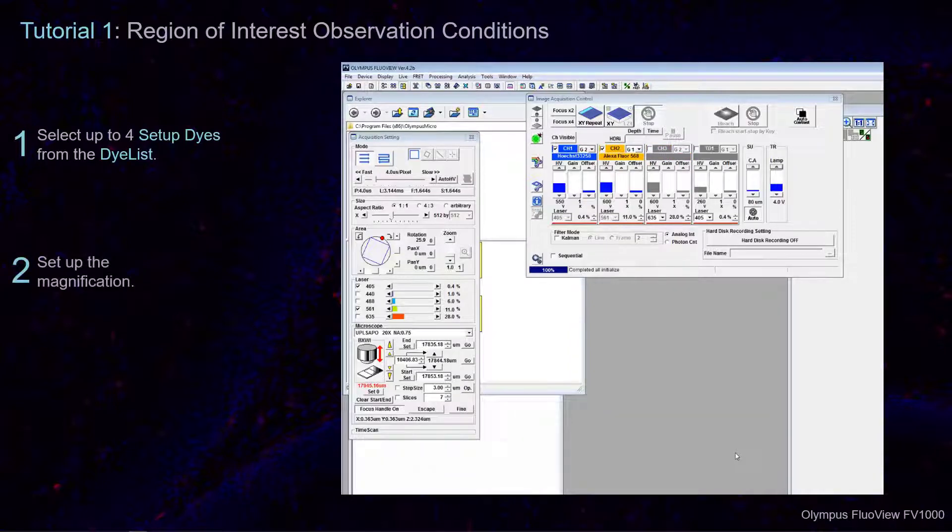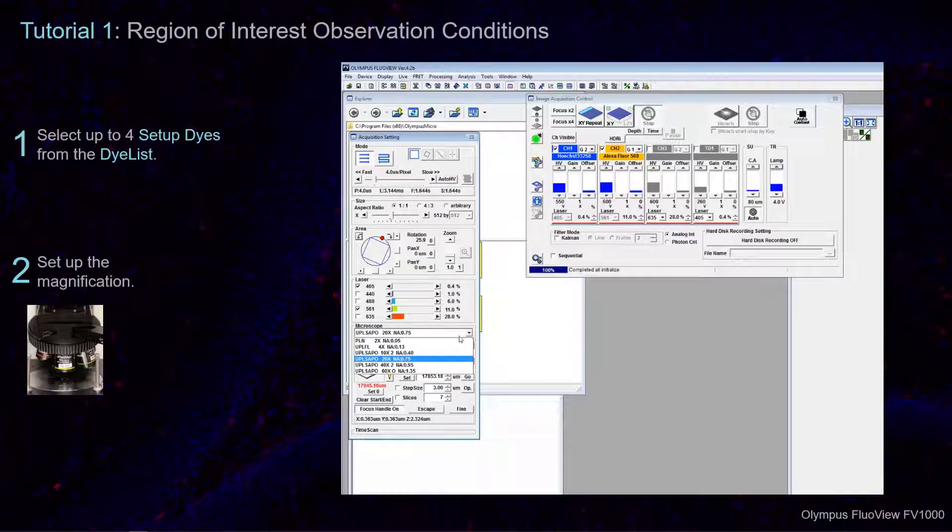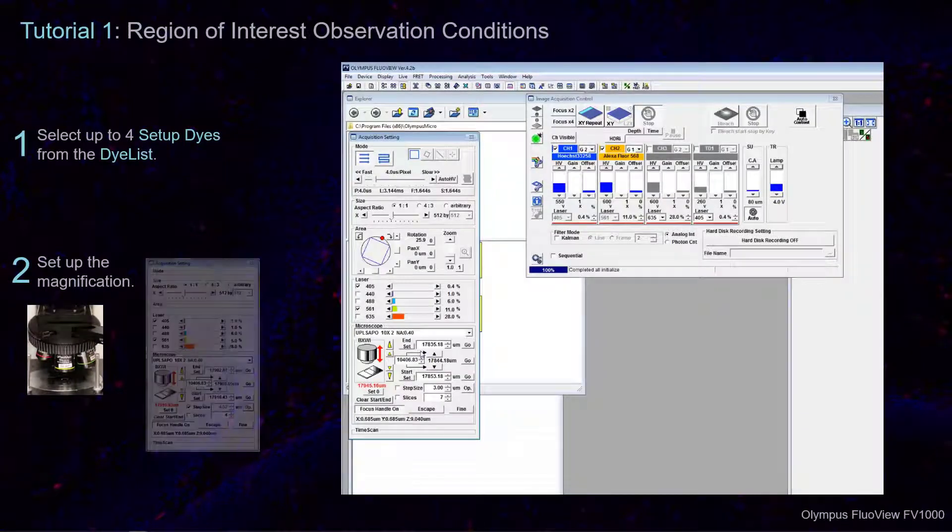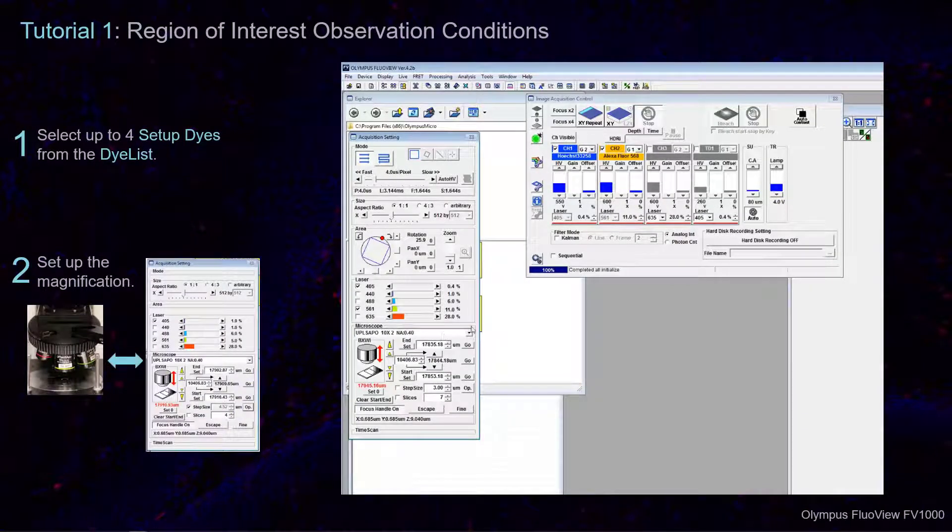Next, rotate to the objective lens at the magnification of your choice on the microscope's objective turret and select the corresponding option from the drop-down list in the microscope acquisition setting.